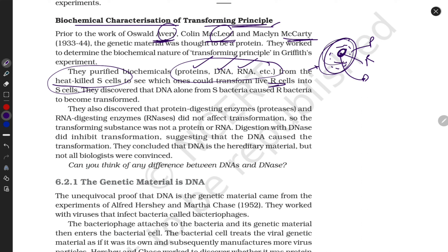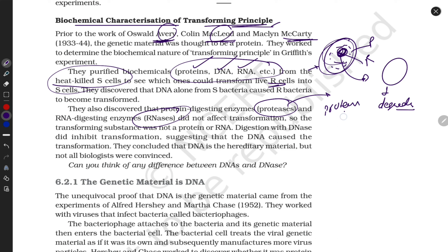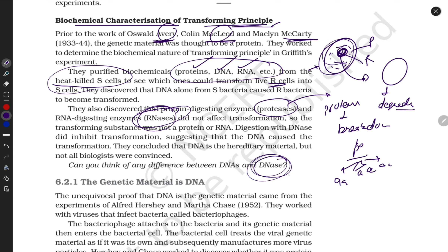To isolate each component, they mashed up the cells and added specific enzymes: protease to break down protein into amino acids, RNase to break down RNA, and DNase to break down DNA into nucleotides. Nucleotides are made up of phosphate group, sugar group, and nitrogen base.